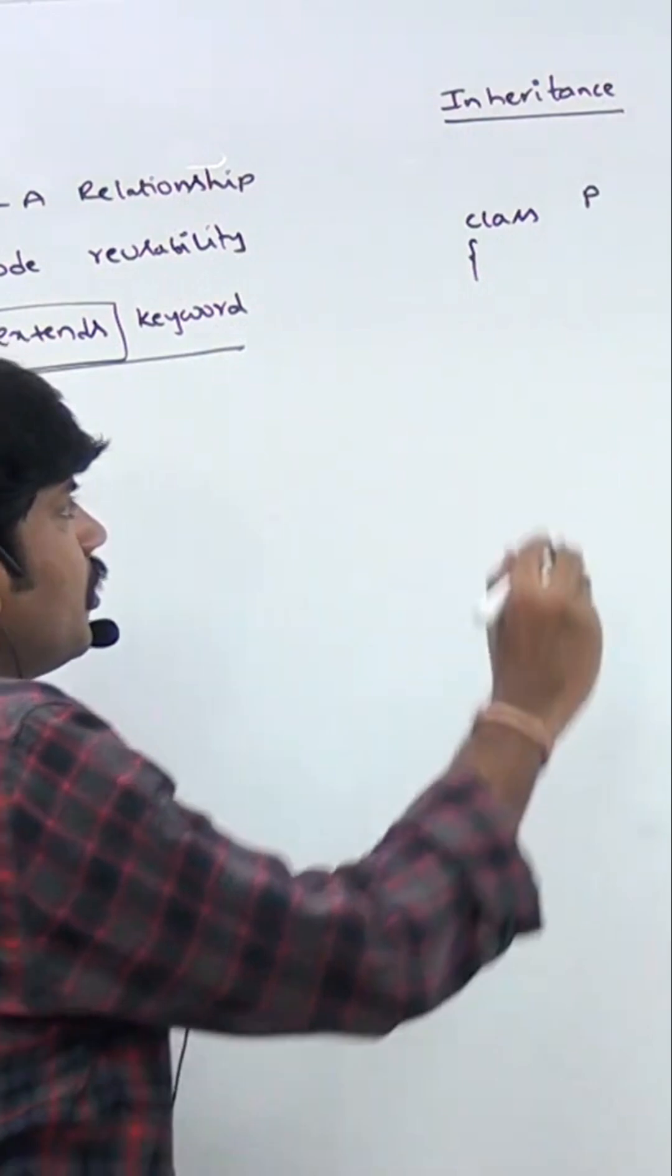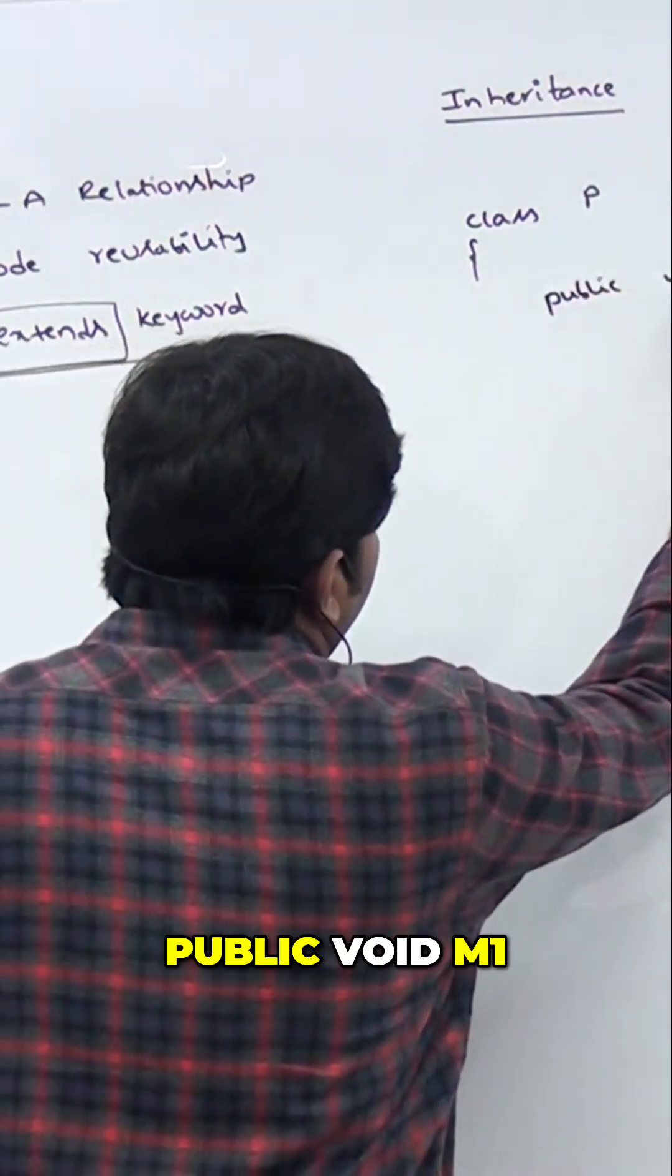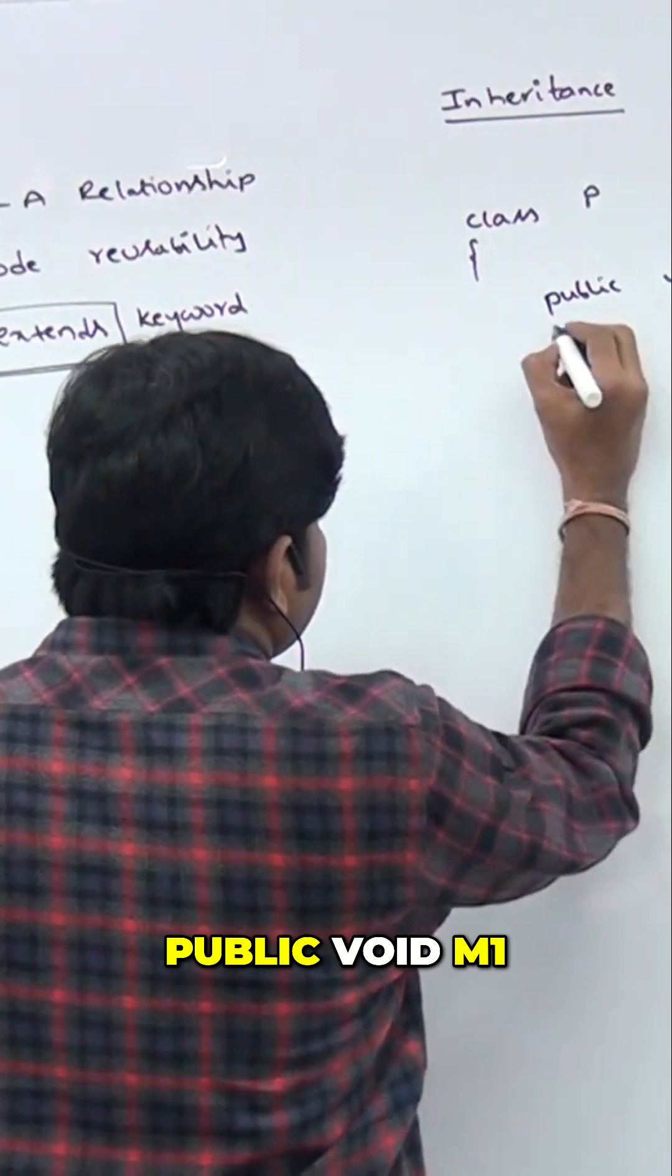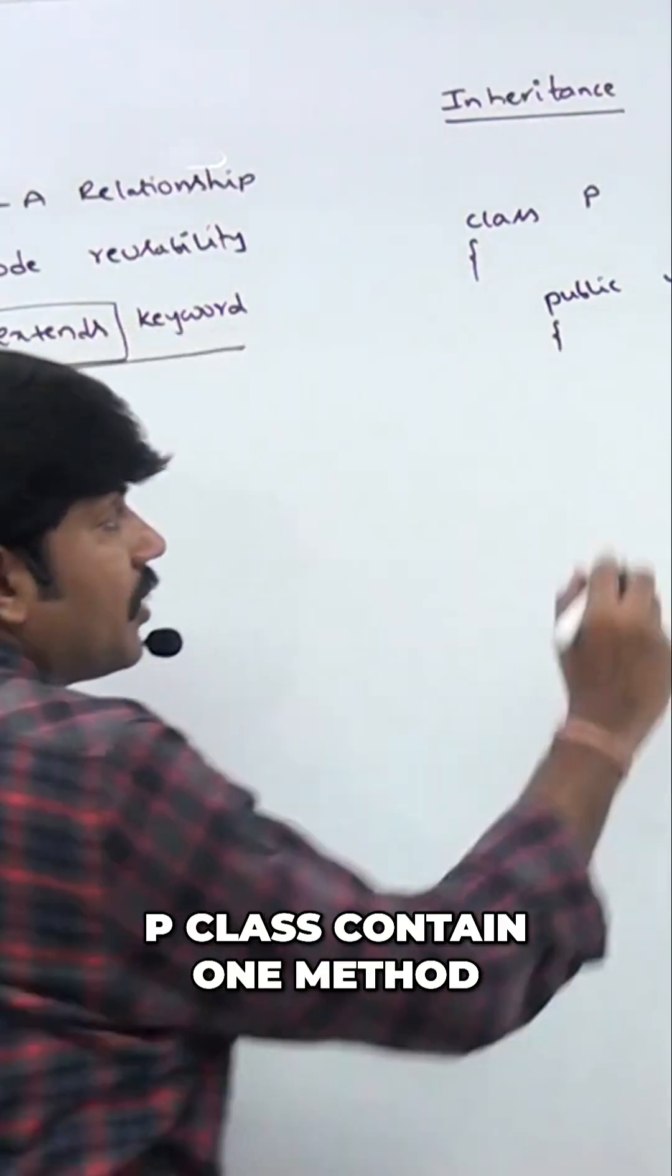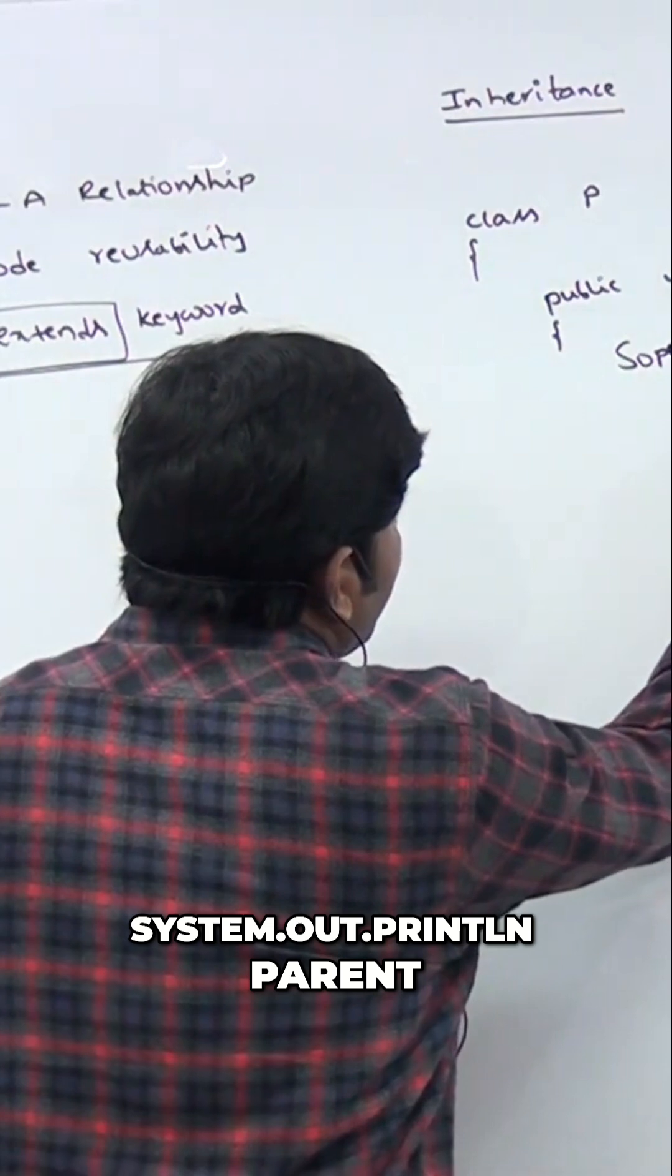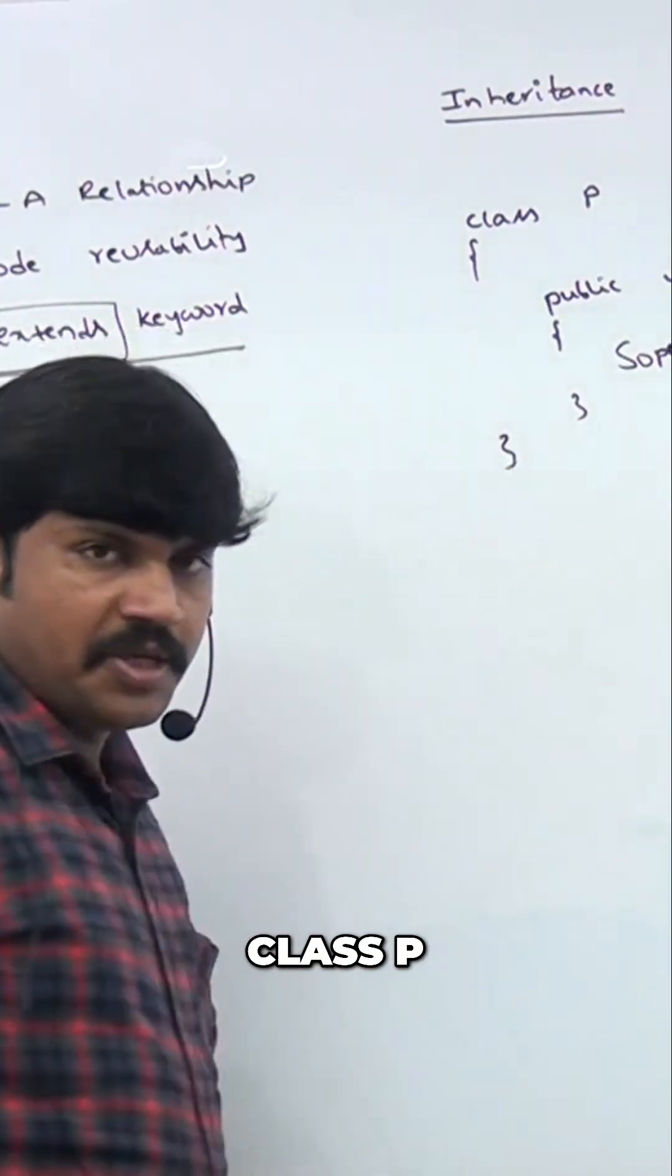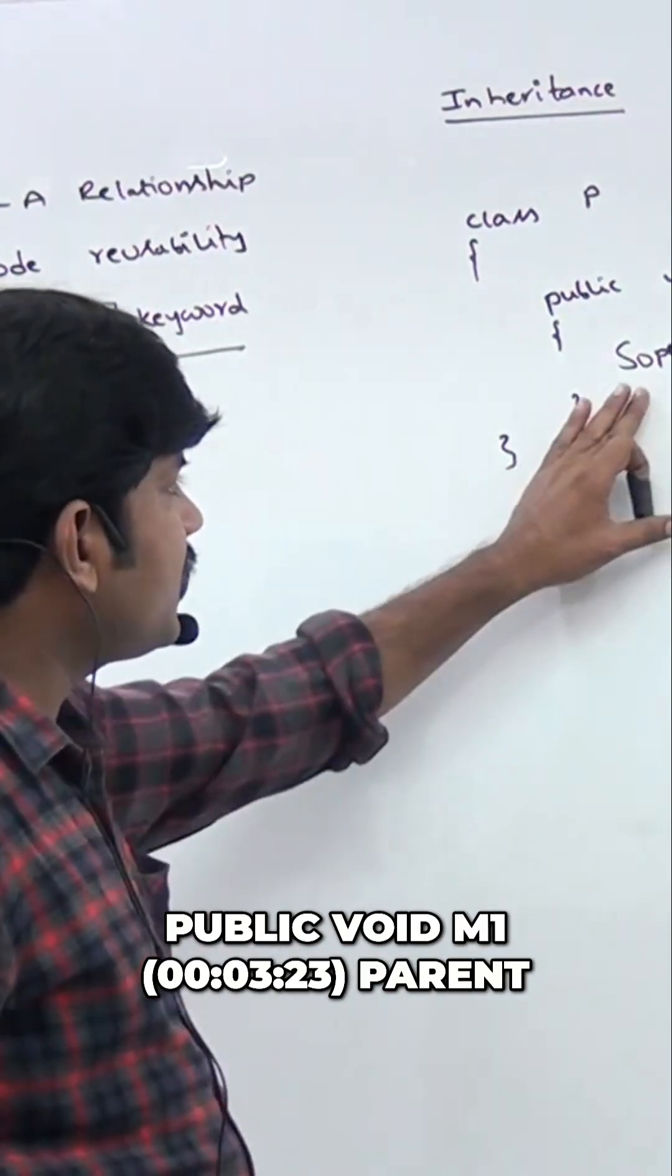Class P contains one method: public void m1. P class contains one method public void m1, System.out.println, and 'parent'. Like this I'm taking class P public void m1 for your parent.